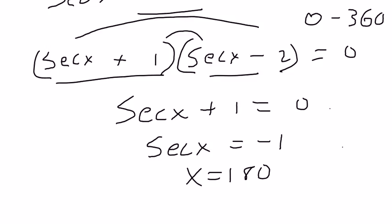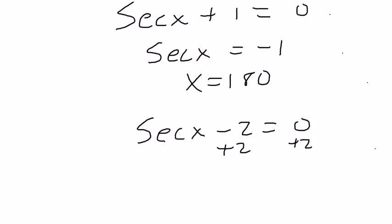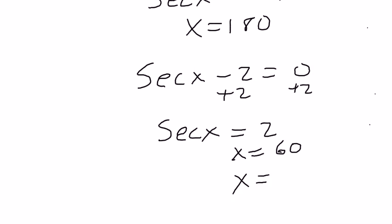Okay, then we can do this second part. When does this secant of x minus 2 equals 0 add 2? I get secant of x equal to 2. Looking at my sheet again between 0 and 360, this happens twice. This happens at x equals 60. And it happens again when x equals 300.